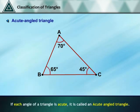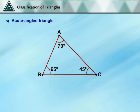If each angle of a triangle is acute, it is called an Acute Angle Triangle. The figure shows an Acute Angle Triangle as each of its angles is less than 90 degrees.